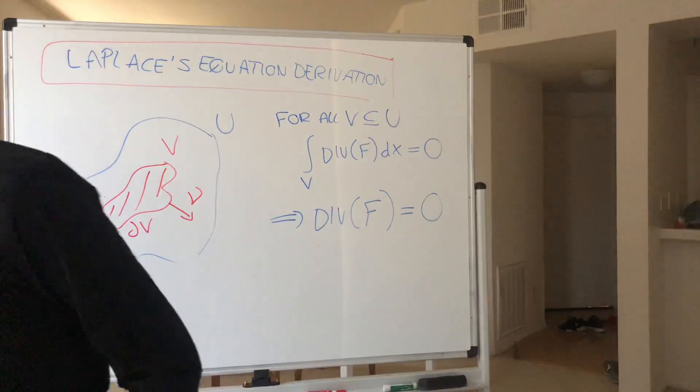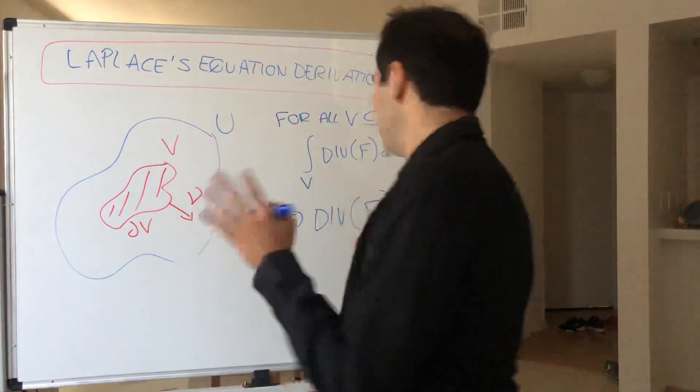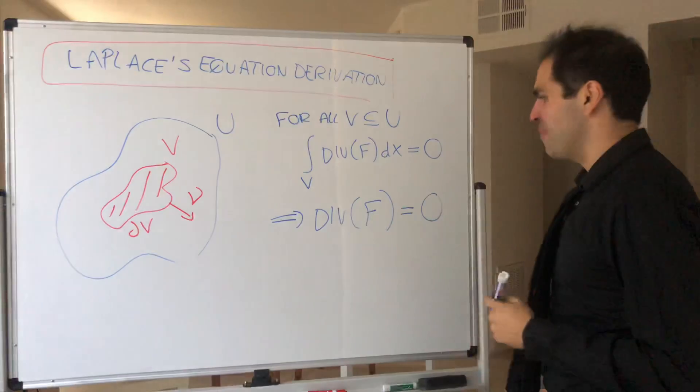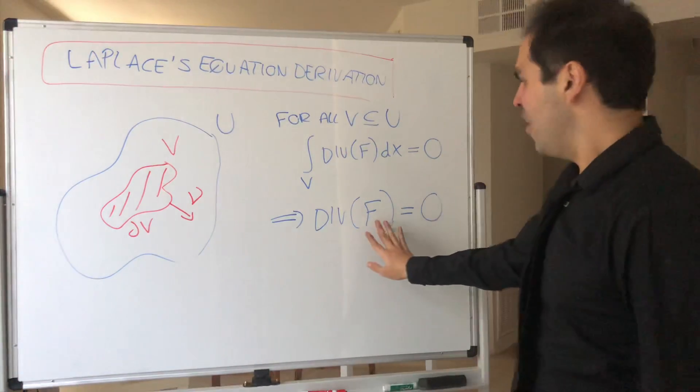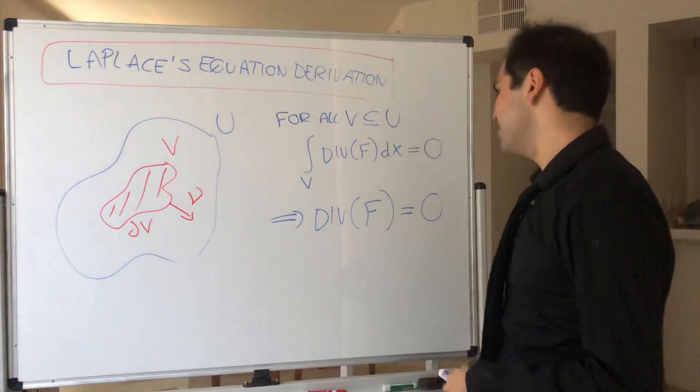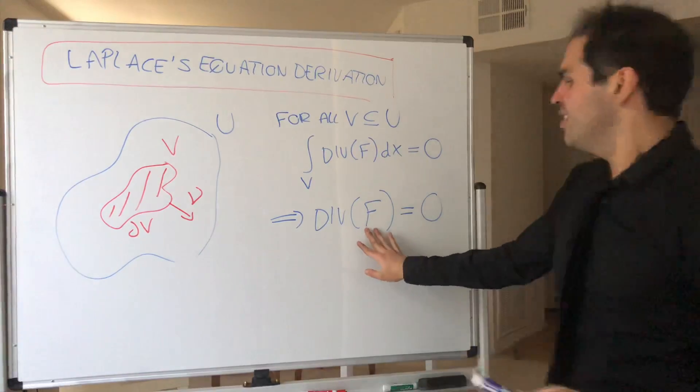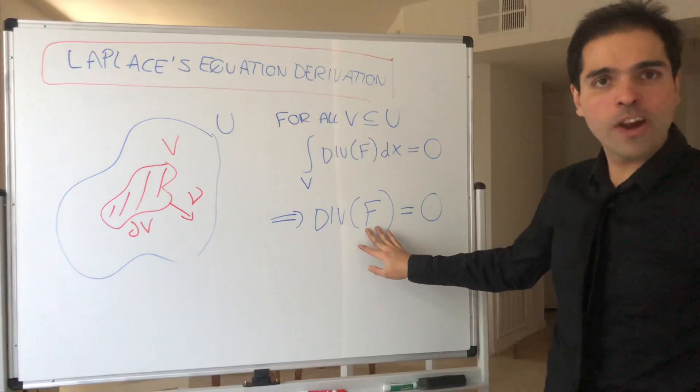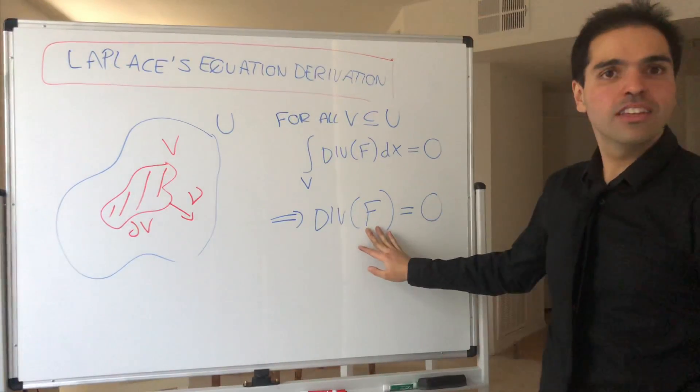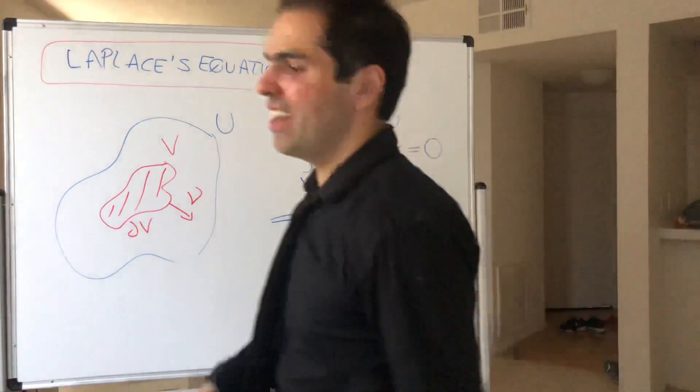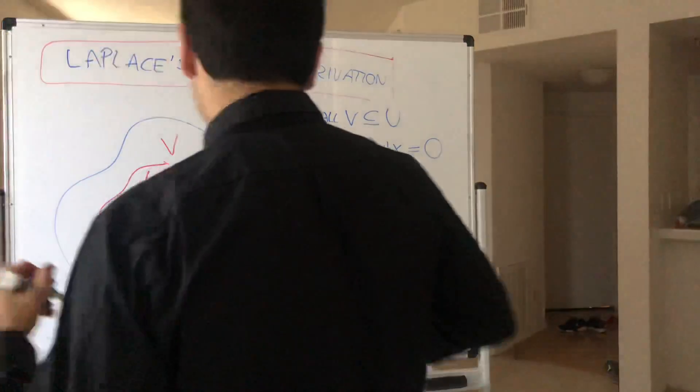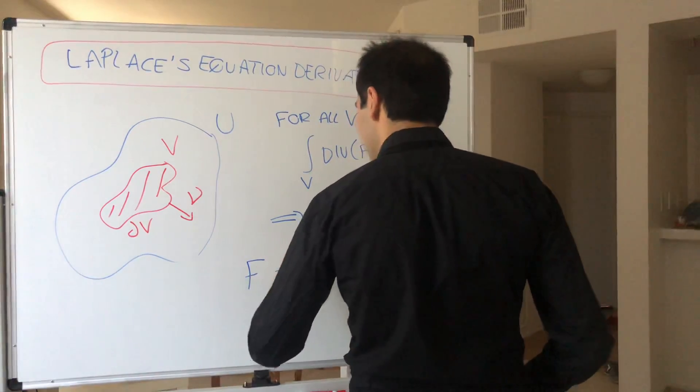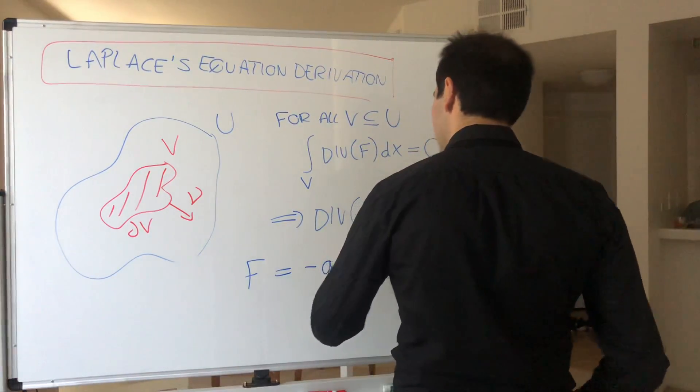So, okay, but now, basically this is just a general vector field, but how can we get to Laplace's equation from that? Well, in physical situations, it's reasonable that your vector field points either towards or against where your density moves the quickest, or where the gradient is.